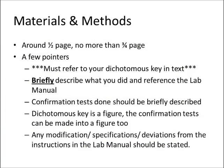Now for your materials and methods. This should be no more than around half a page to three quarters of a page, and there are a couple of pointers about the format. You have to refer to your dichotomous key in the text — that's an absolute must. You're going to want to briefly describe what you did and then reference the lab manual. There's a proper citation for the lab manual. Confirmation tests that were done should be briefly described as well. Your dichotomous key is a figure. The confirmation tests can be made into a figure as well, and any modifications, specifications, or deviations from the instructions in the lab manual have to be stated.